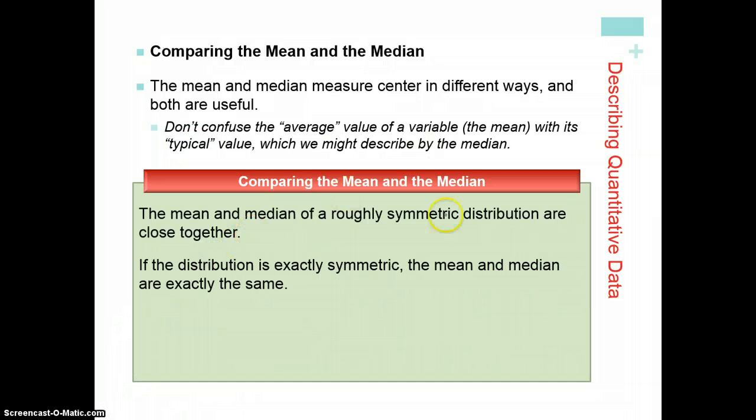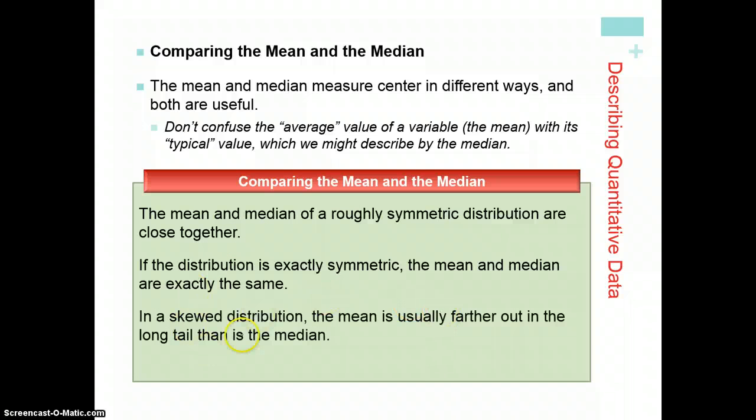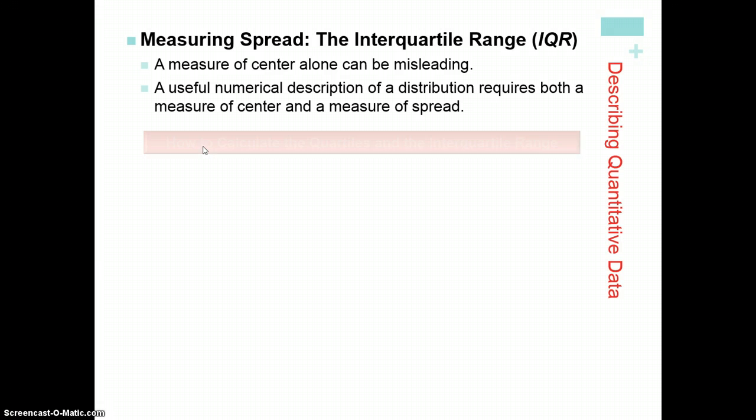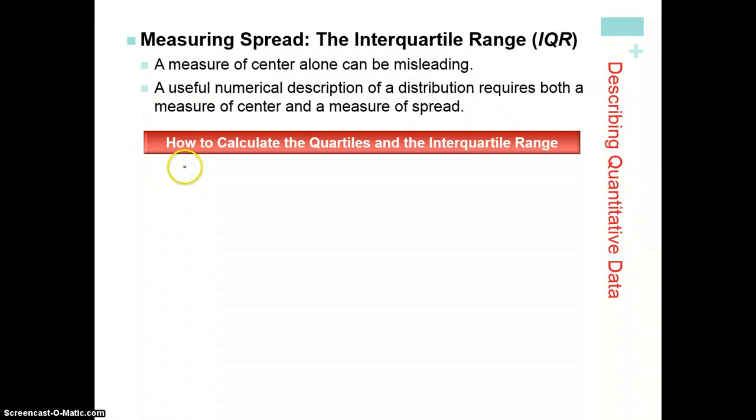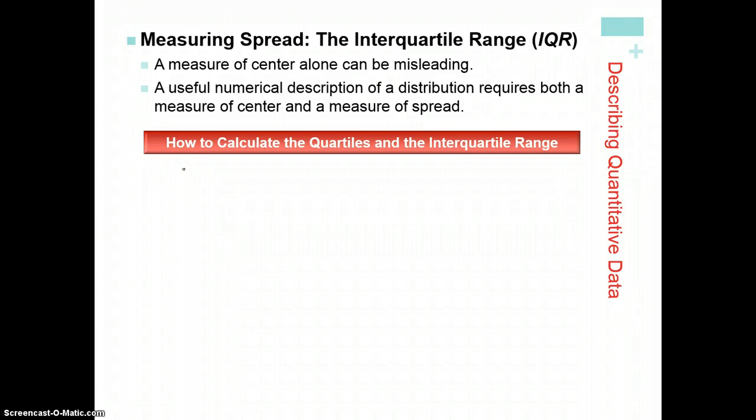If the distribution is exactly symmetric, the mean and median are exactly the same. In a skewed distribution, the mean is usually farther out in the long tail than is the median. So yeah, I drew that for you, showing the skewed distributions and how the mean would be greater or less than depending on which direction it's skewed.